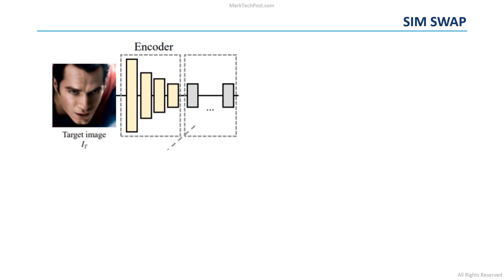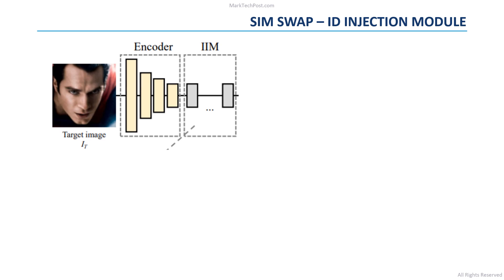To overcome this limitation, the researchers of SIMSWAP improve the architecture by adding an additional module after the encoder. Given a target image, it is passed through the encoder to extract its features. Then they replace the identity information in the features with the identity information of the source face, while keeping the attribute information in the features unchanged. So they directly modify the whole features vector. This process is achieved through the ID injection module. The researchers use a training loss that encourages the network to learn implicitly which part of the features should be changed and which part should be preserved.